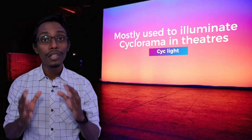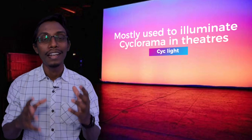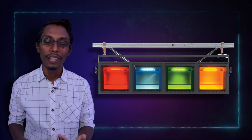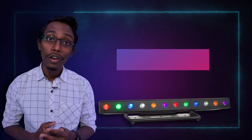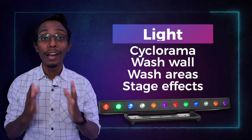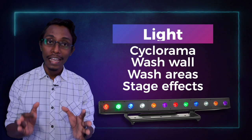Number six: Batten lights — in old days called cyclight. Batten lights are mostly used to illuminate the cyclorama in theaters. The cyclorama is the curtain at the back of the stage. Early cyclights were a long housing containing light bulbs and colored gels. Nowadays we have replaced cyclights with batten lights. We use batten lights to light up the cyclorama, wash walls, wash areas, and especially as stage effects.